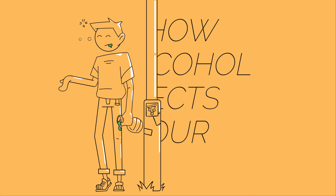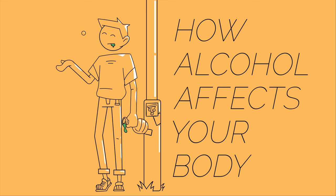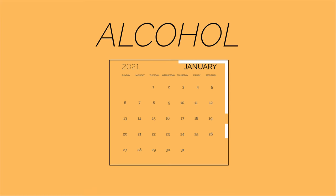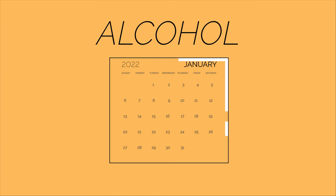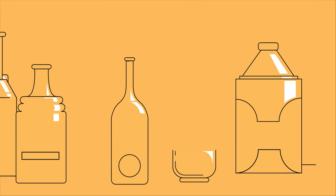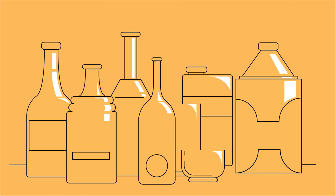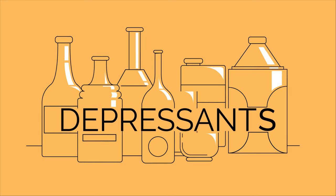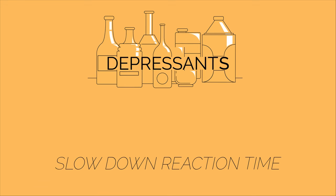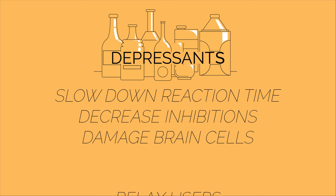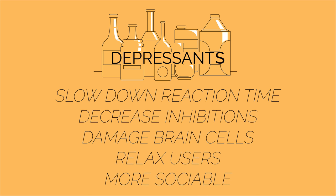Can you think of one way that alcohol affects the body? In this video we're going to learn about alcohol's long-term and short-term effects. Alcohol belongs to the class of drugs known as depressants. Depressants slow down reaction times, decrease inhibitions, damage brain cells, relax users and make them more sociable.